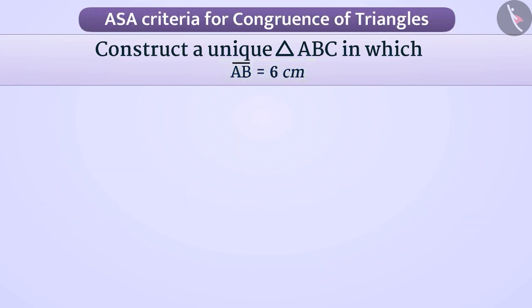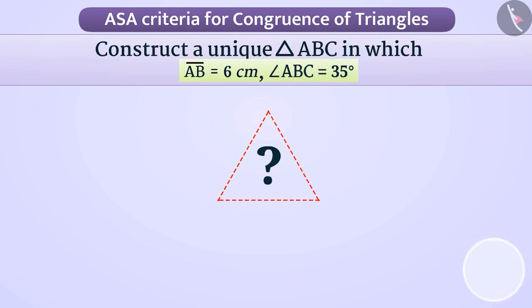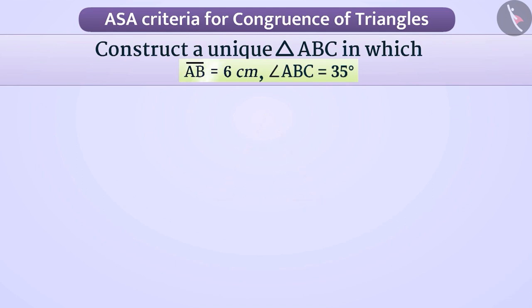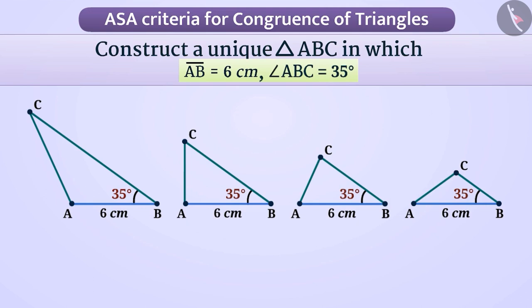Consider this: if you are given the length of side AB as 6 cm and the measure of angle ABC as 35 degrees, will you now be able to produce a unique triangle? In this case also, we can draw any number of triangles ABC, but again we will not be able to produce a unique triangle.